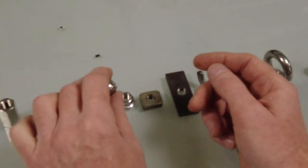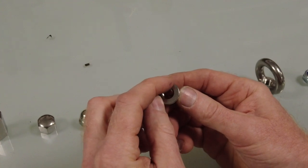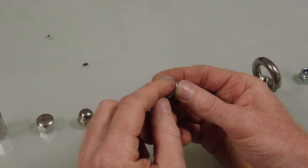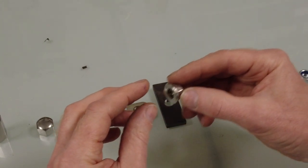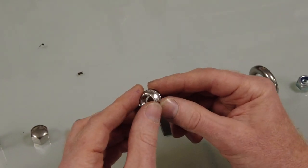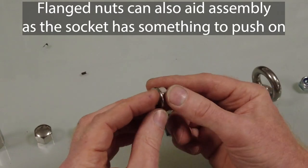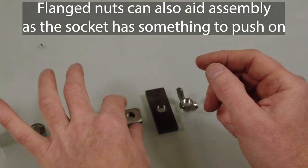Flanged nut - as it comes down this spreads the force over a bigger area and stops the nut digging into the material. That's a flanged nut. It's nice, saves you having to put a flat washer between it because it's sort of got the washer built in.